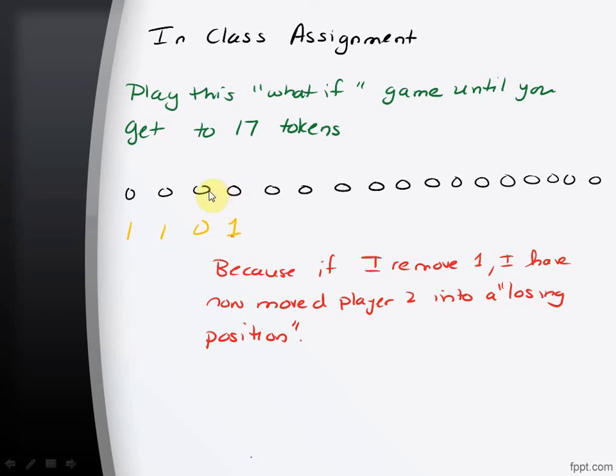So if I grab 1 token from here, then that puts the other player in the 3 case, but their first player now, because it's their move. And I already know the answer is 0. Right. So, here I can win by moving that person into a losing position.